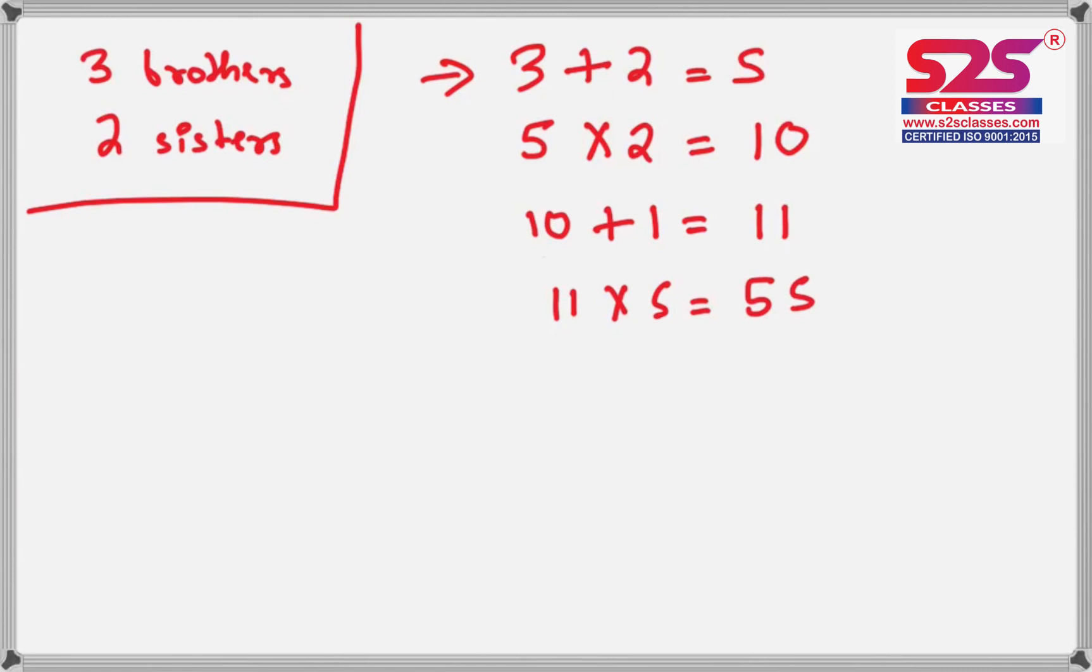Now what you need to do is tell them to imagine the number of sisters they have and add it to the final number. So now here we will add two to fifty-five because we have taken the number of sisters as two, which will give me fifty-seven.